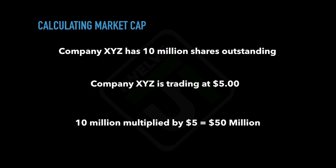To calculate the market value of a company, also known as the market cap, we take the number of outstanding shares a company has and multiply it by the current stock price. For example, here we have company XYZ — it has 10 million shares outstanding and its current stock price is $5. So we take 10 million and multiply it by $5, we get $50 million. So theoretically, company XYZ is a $50 million company.